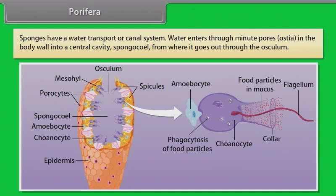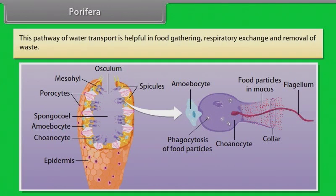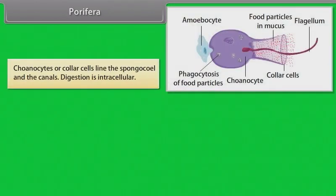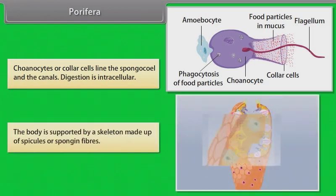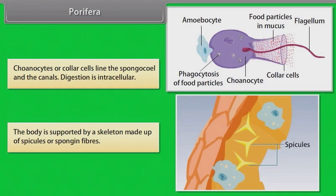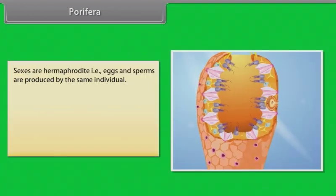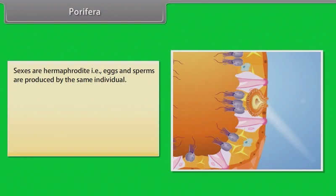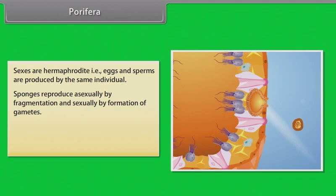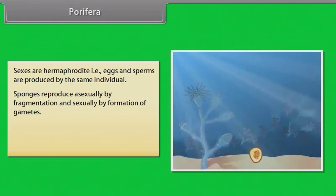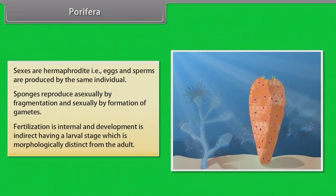Sponges have a water transport or canal system. Water enters through minute pores known as ostia in the body wall into a central cavity called the spongocoel. Sponges are hermaphrodite — eggs and sperms are produced by the same individual. They reproduce asexually by fragmentation and sexually by formation of gametes. Fertilization is internal and development is indirect, having a larval stage which is morphologically distinct from the adult.